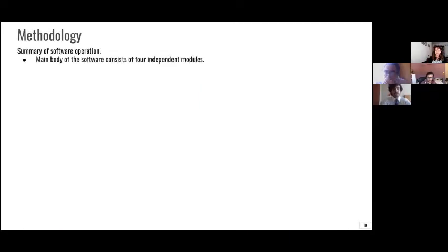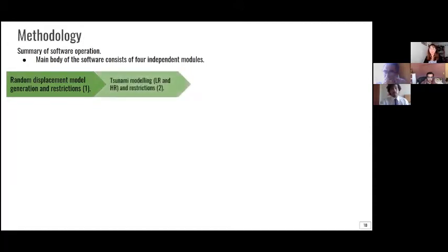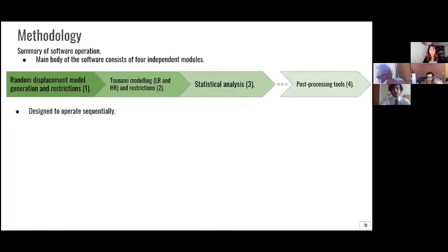So this is a summary of the numerical methodology that I'm creating right now. The main body of the software consists of four independent modules. The first one is the one that generates the random displacement models and restricts them. The second one is in charge of modeling tsunami in low resolution and in high resolution and restricts them using paleo tsunami data. The third one is the one that is in charge of automatically analyzing these results. And the fourth one is a module for post-processing this data, namely to plot maps and plot time series.